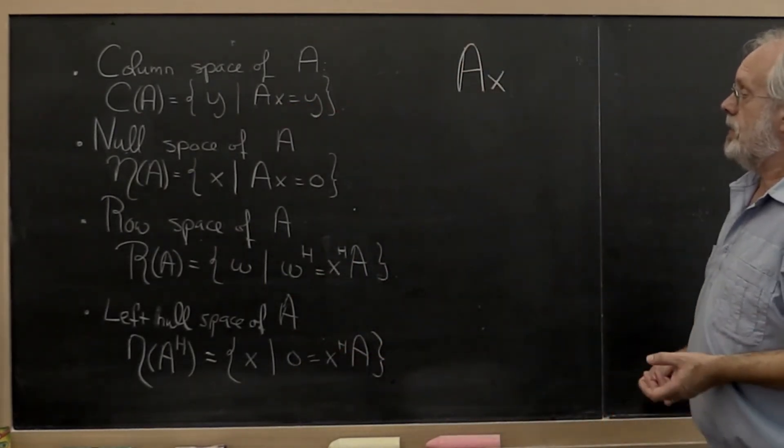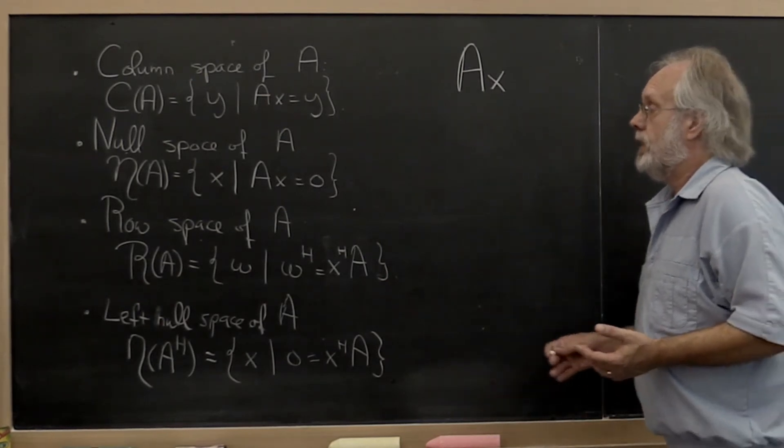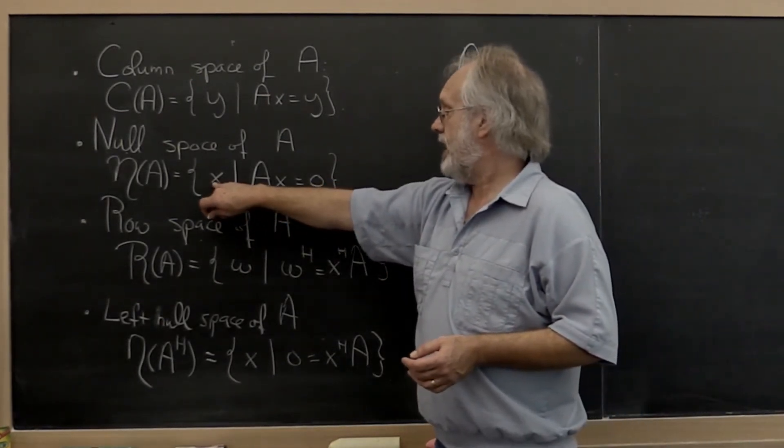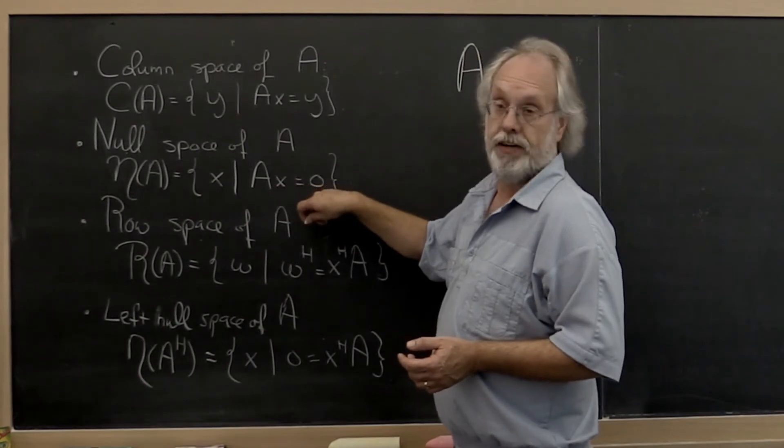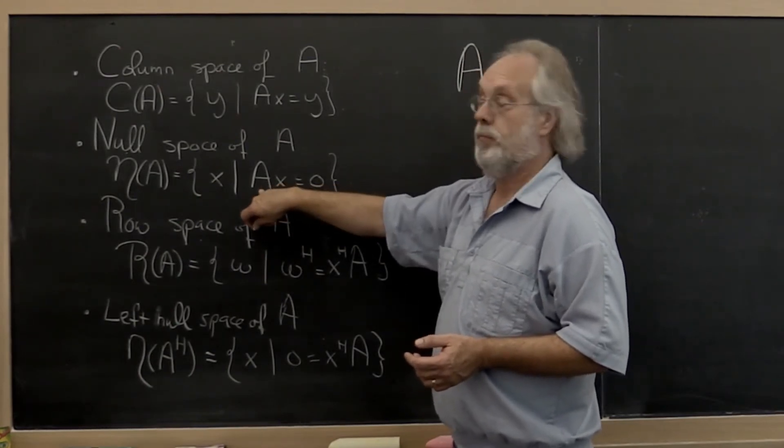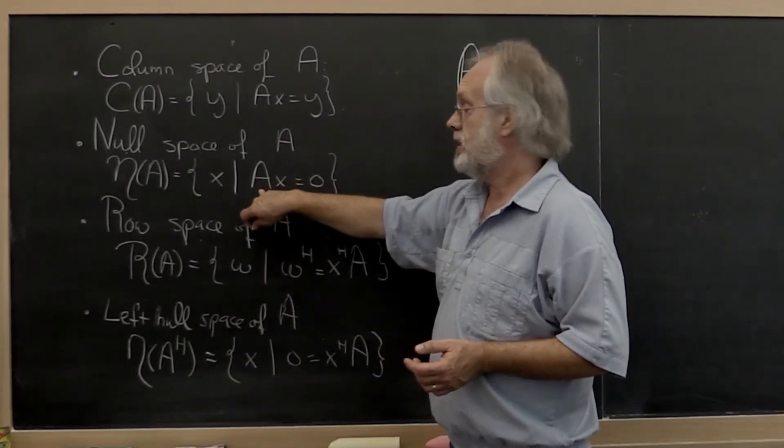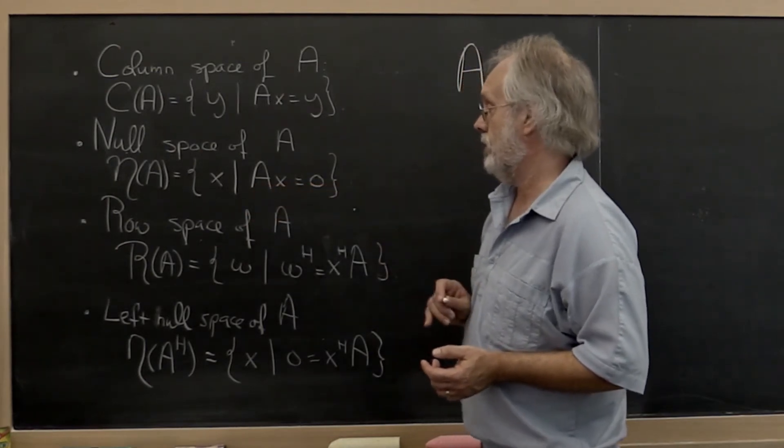And then the null space is another space that you ran into. And that's the set of all vectors x that map to the zero vector when you apply matrix A. So it's the set of all vectors such that A times x is equal to zero.